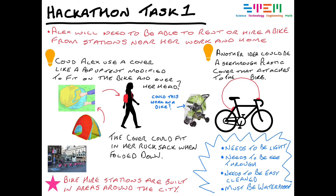I'm thinking: can I actually use that pop-up tent idea to create this shield? On the right-hand side of the page you can see a small sketch of a bike, and I've drawn where I think this would be best fitted on the bike to keep her clothes and hair dry. At the bottom I've put in an image of a Next bike stand in the city, with notes about bike hiring available throughout Glasgow, and notes about what I think my solution needs to do to meet the brief given for Alex.